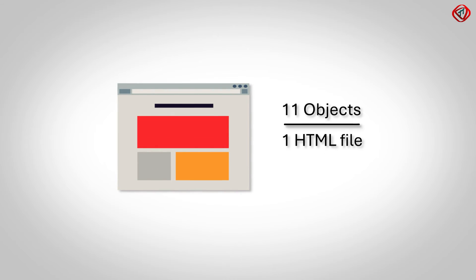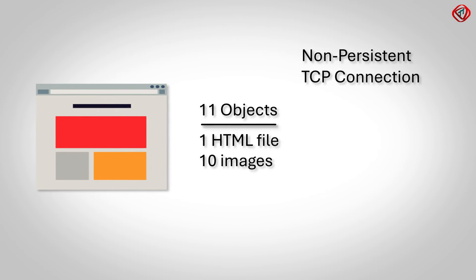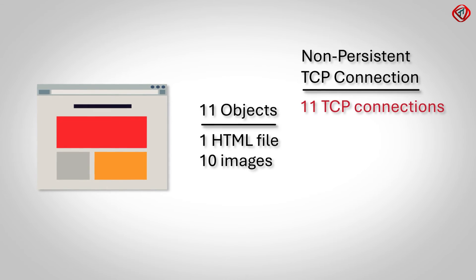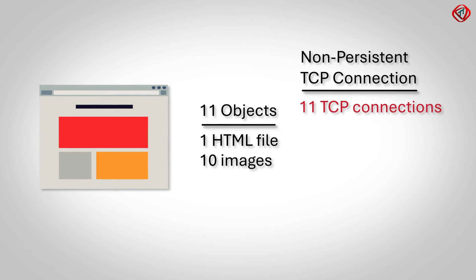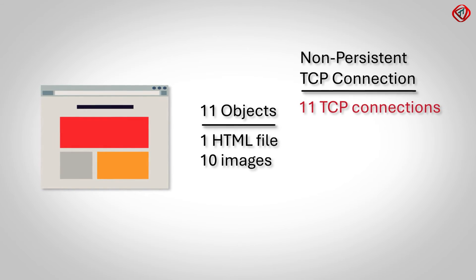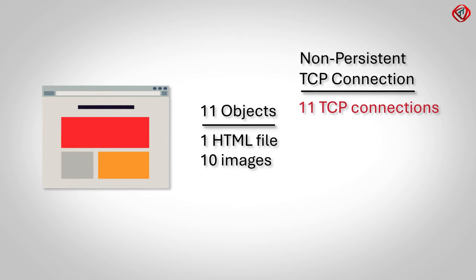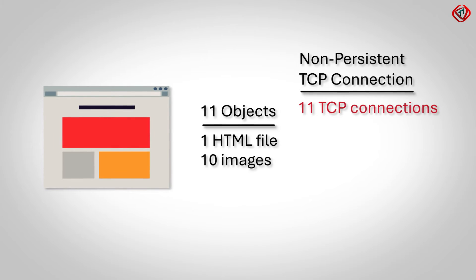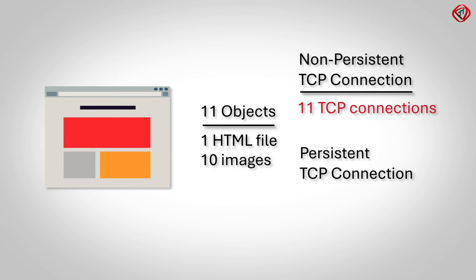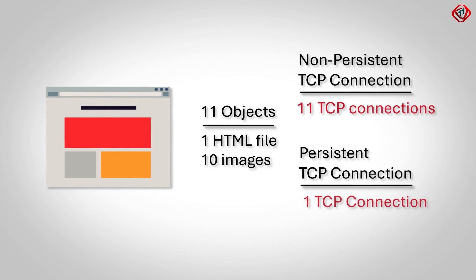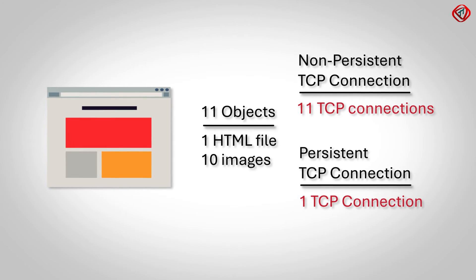In our example, the web page consists of 11 objects: 1 HTML file and 10 images. So in a non-persistent TCP connection, 11 separate TCP connections must be opened — 11 TCP connections are required to obtain 11 objects of the web page. On the other hand, in a persistent TCP connection, only one TCP connection is required to obtain all 11 objects from the web server.